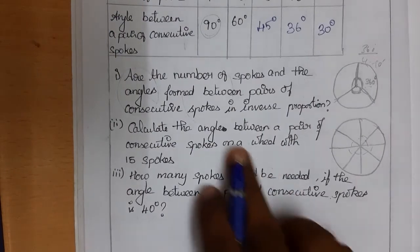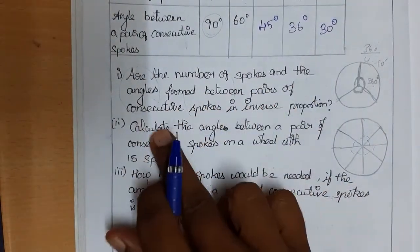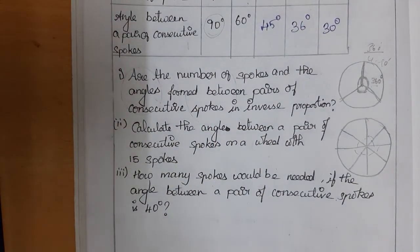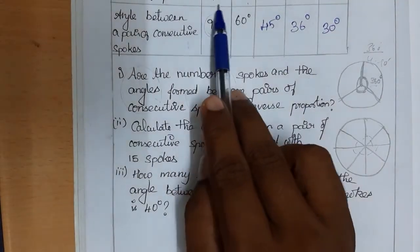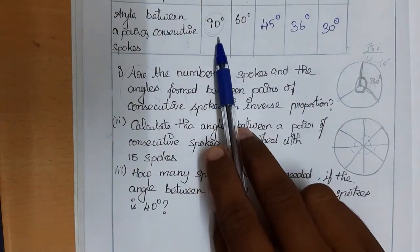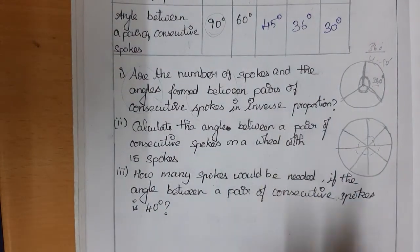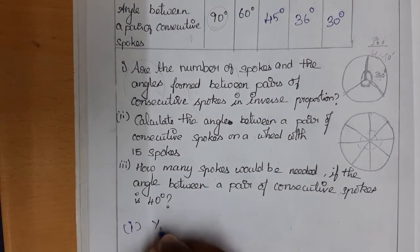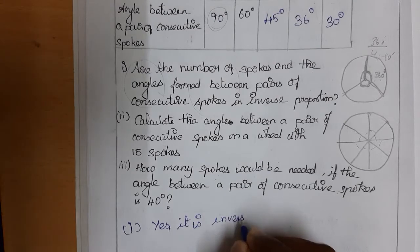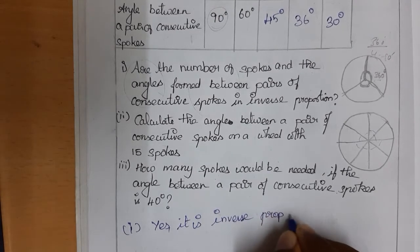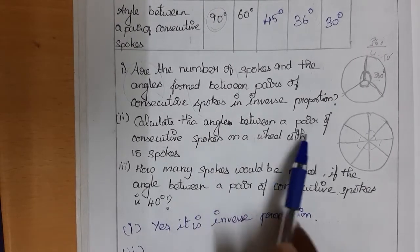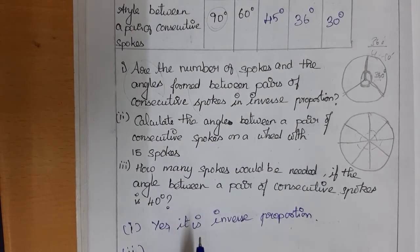Are the number of spokes and the angles between consecutive spokes in inverse proportion? Yes — the number of spokes is increasing and the angle is decreasing, so it is inversely proportional.